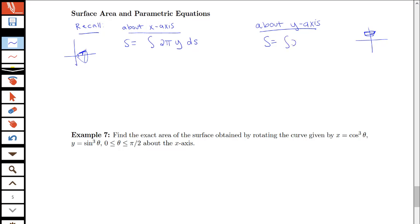So this would be an integral of 2πx, or x would be that horizontal radius times my arc length ds.